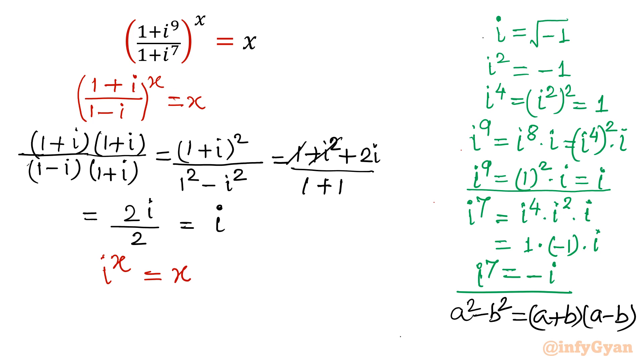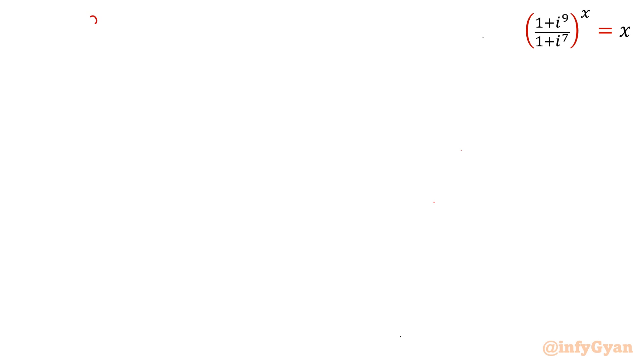So let me take ln both sides. So I will write ln(i^x) equal to ln x. In next step, I will use the property of log. ln(a^v) can be written as v ln(a). So it will become x ln i equal to ln x. Now one exponent rule which is very useful in such kind of questions. x is equal to e^(ln x). This is something which is very useful in such kind of equations. So I will write in place of x, I will write e^(ln x) times ln i equal to ln x.